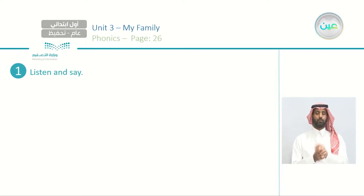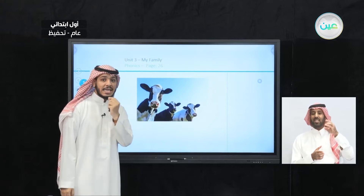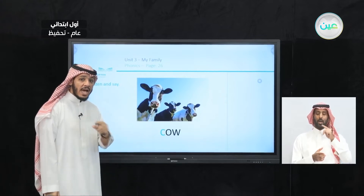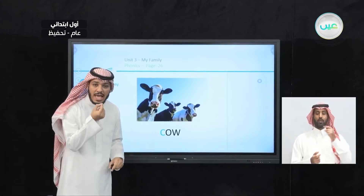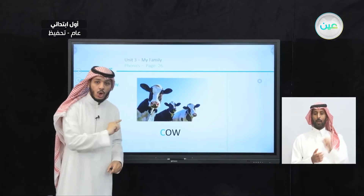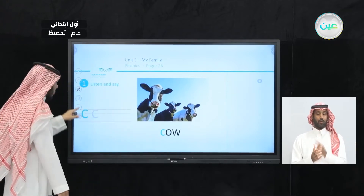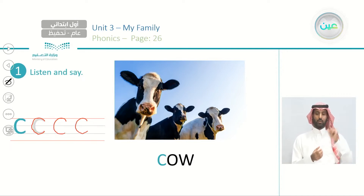What after B? C. A, B, C. Excellent. We have an animal here and it starts with C, but C we pronounce as K. Can you tell me what is this? This is a cow. Excellent. We have the letter C here, but I pronounce it as cow. How to write the letter C? Let's trace — this is C. And I pronounce it as K.